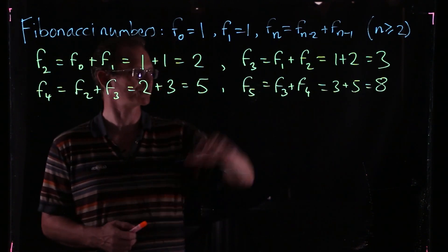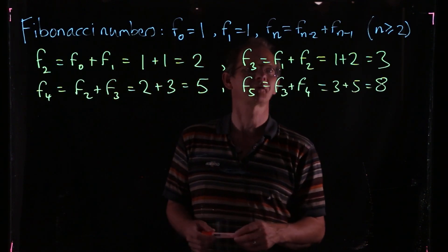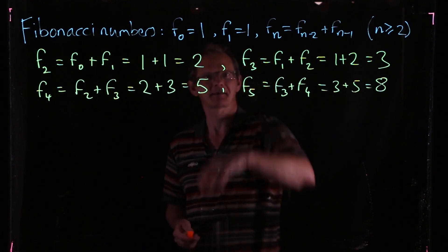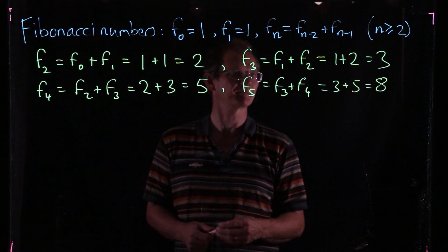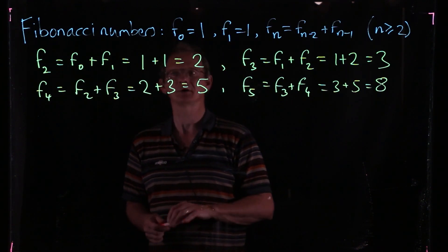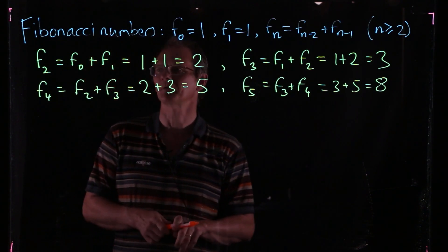Of course, this recursion allows us to calculate any Fibonacci number, but if you wanted to know what's F1000, then you'd have to do 1000 steps. You might like to have a different formula for it. There are several formulas you can use for Fibonacci numbers. Here we're going to prove one that involves binomial coefficients.